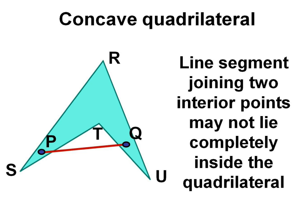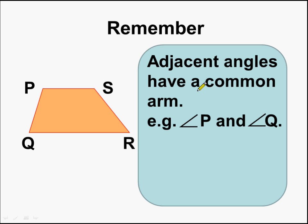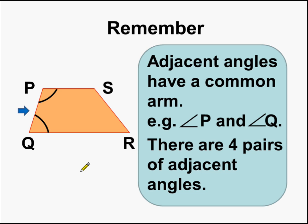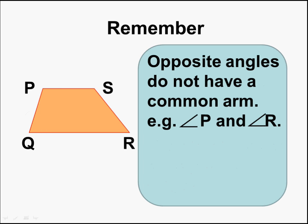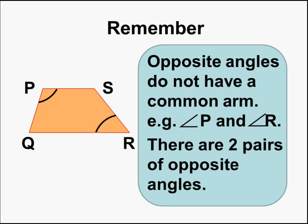Understood, children? So remember what we learnt today about quadrilaterals. First, adjacent angles have a common arm — for example, angle P and angle Q have a common arm which is line segment PQ, so there are four pairs of adjacent angles. Next, opposite angles are angles which do not have a common arm — for example, angle P and angle R do not have any common arm. There are two pairs of opposite angles: angle P and angle R, and angle Q and angle S.